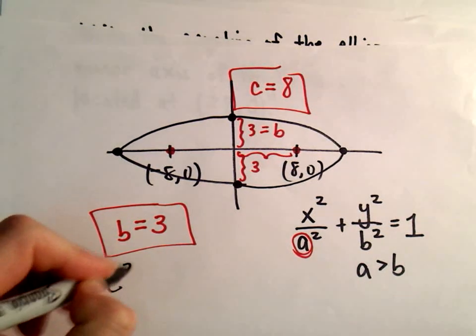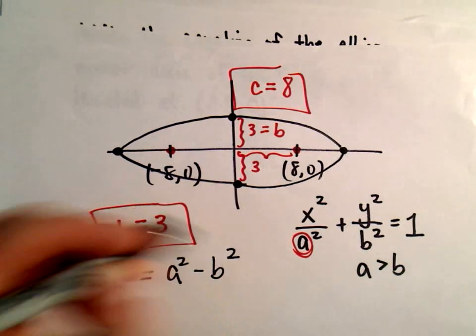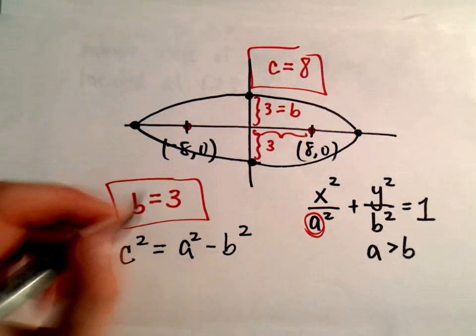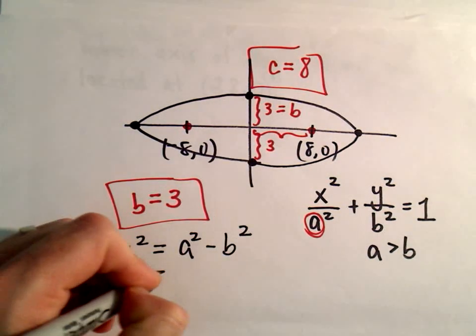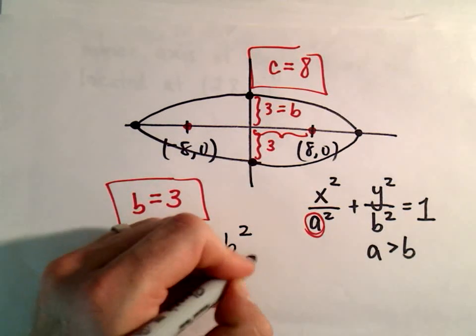The relationship is that c² equals a² minus b², and we'll use this to figure out a. So 8² equals a² minus 3².